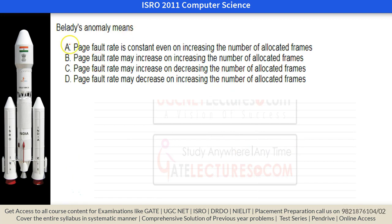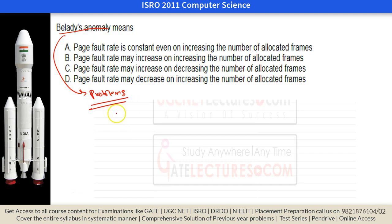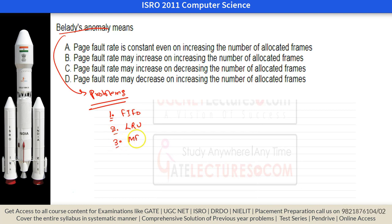Belady's anomaly is a problem that occurs in certain page replacement algorithms such as FIFO (First In, First Out). It refers to the counterintuitive phenomenon where increasing the number of page frames can actually increase the number of page faults. Other algorithms like LRU, optimal, and MFU are also mentioned.